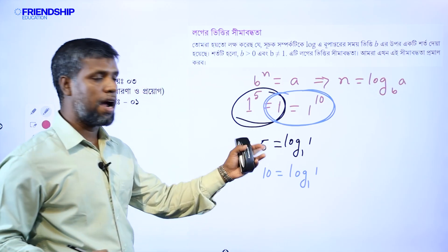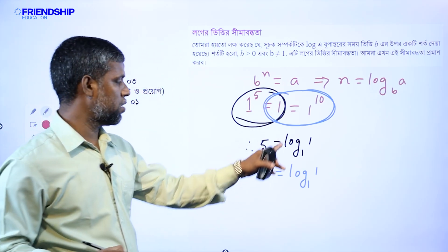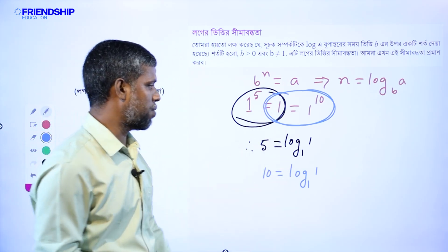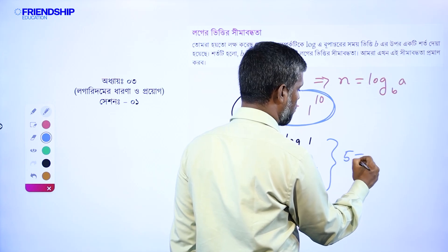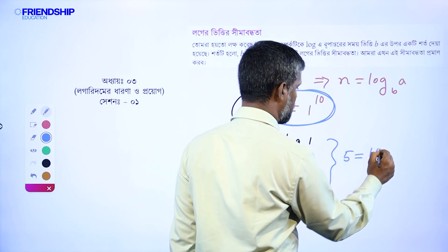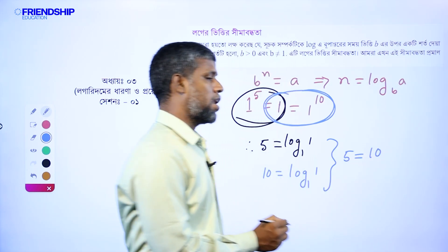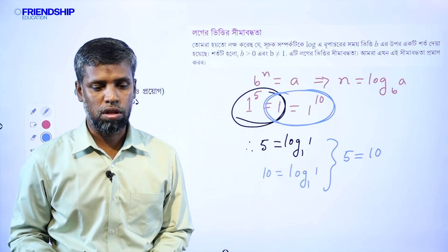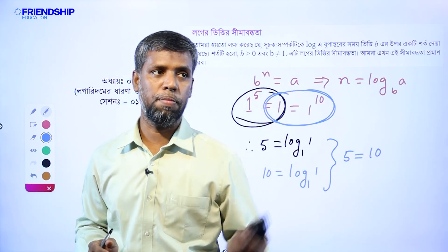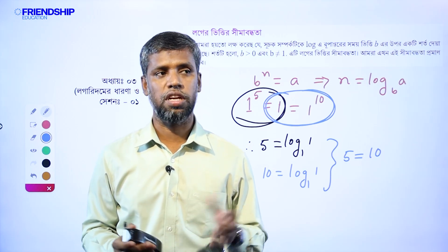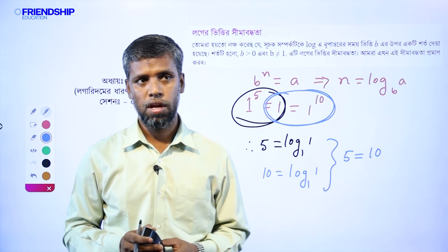So, on the right side, they are equal, and we can say 5 is equal to 10. That gives 5 equal to 10, which is a contradiction. So, this problem shows we cannot have log base 1.